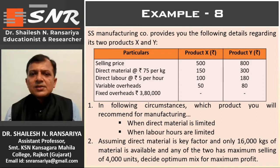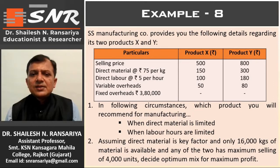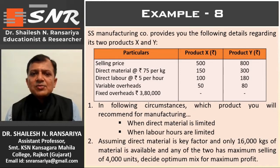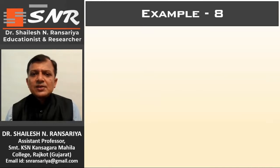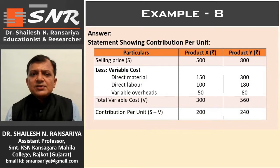In this example, two key factors are available: first direct material, and second direct labor. When direct material is the key factor it relates to kilograms, and when labor is the key factor it relates to hours. We have to calculate first contribution per unit, then we can calculate contribution per kilogram or contribution per hour.